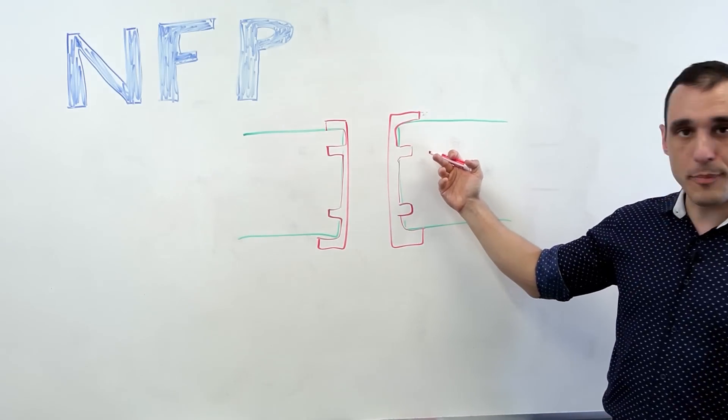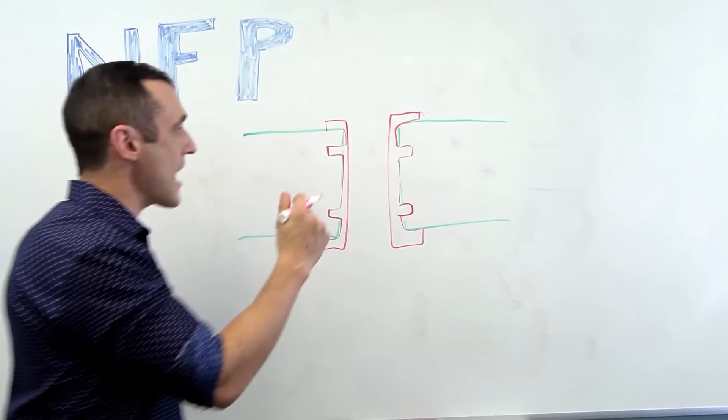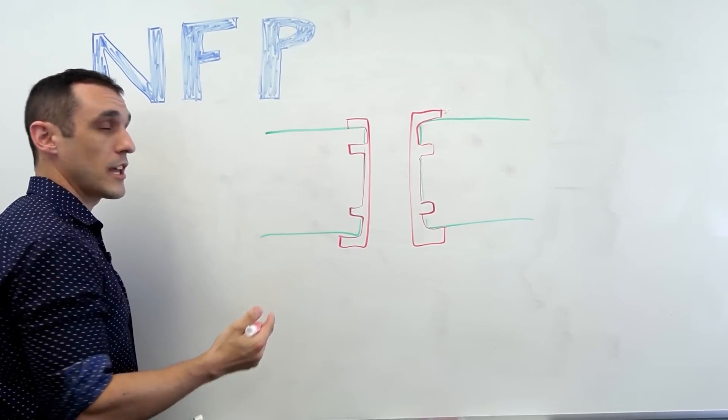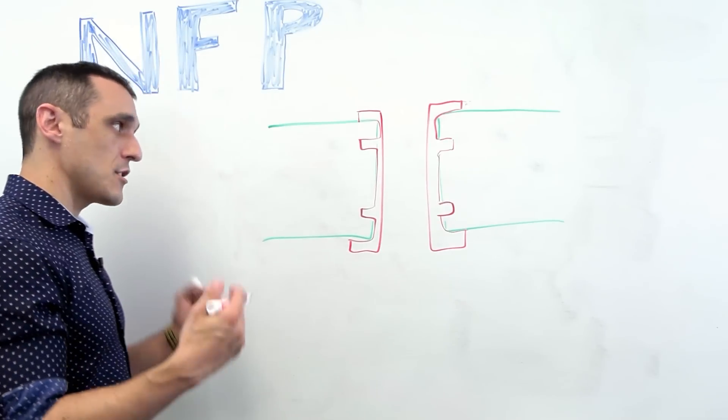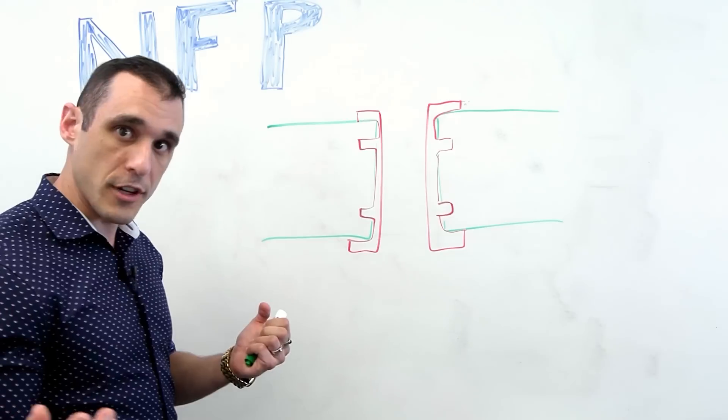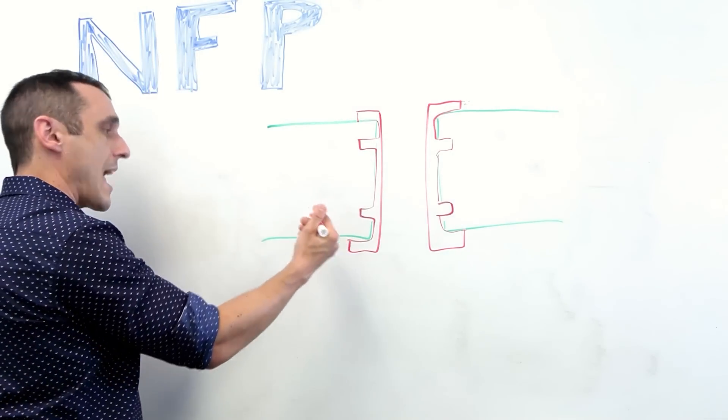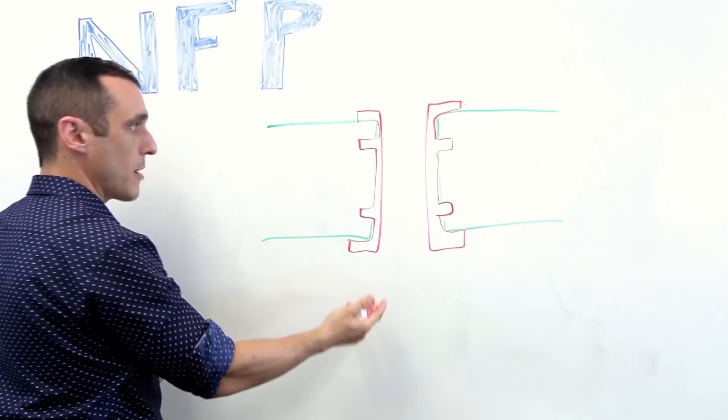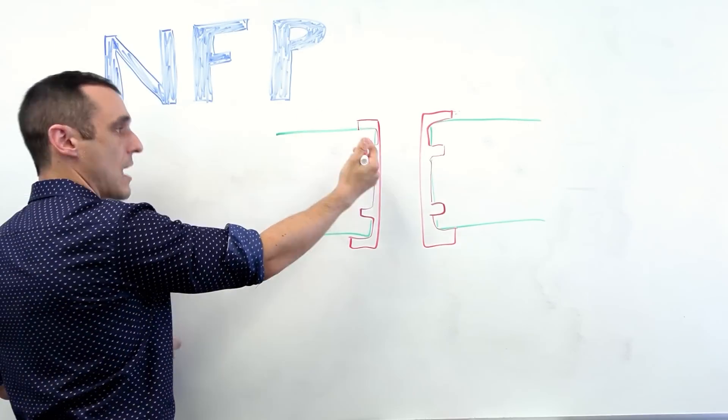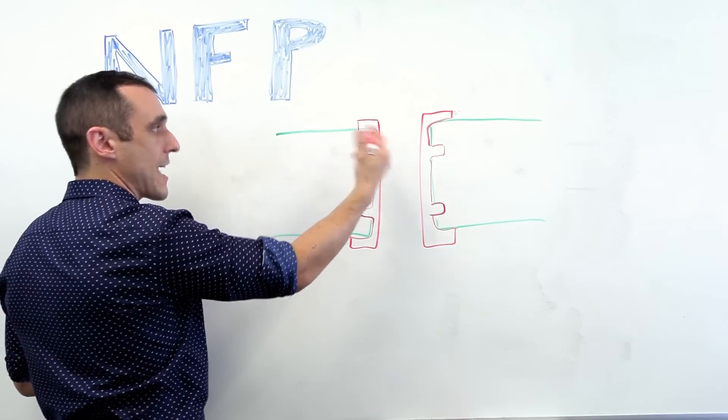These internal pads, when they do not connect to any traces on the internal layers are called NFPs or non-functional pads. They essentially perform no electrical function. They just exist as pads in the PCB stackup, and of course, you then drill through them during fabrication, plate this up, and you have these pads left over that are attached to the via.